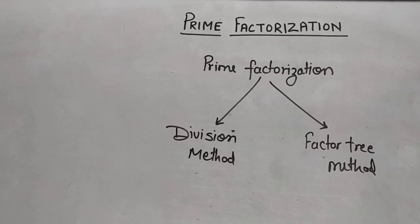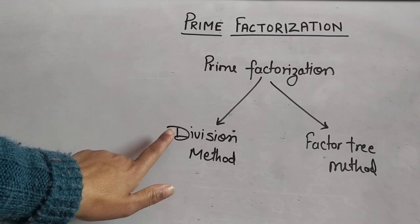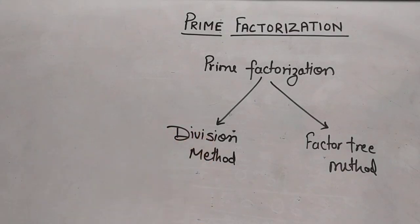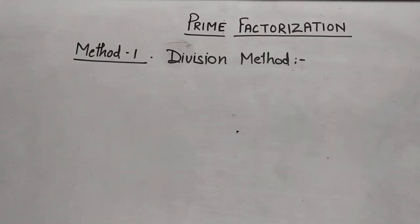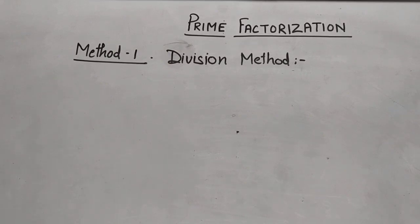There are two ways to find out the prime factorization: first, the division method, and second, the factor tree method. Let us learn these methods one by one.